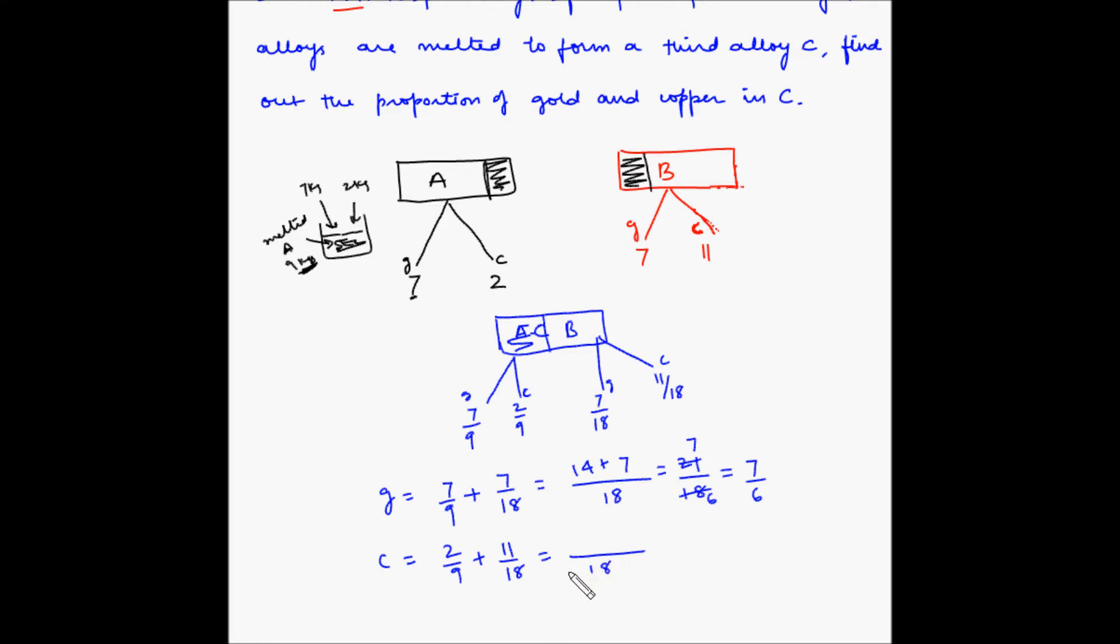LCM again is 18. 9 2s are 18 and 2 2s are 4 plus 18 1s are 18 and 11 1s are 11. So this is 15 divided by 18, which is 5 divided by 6.